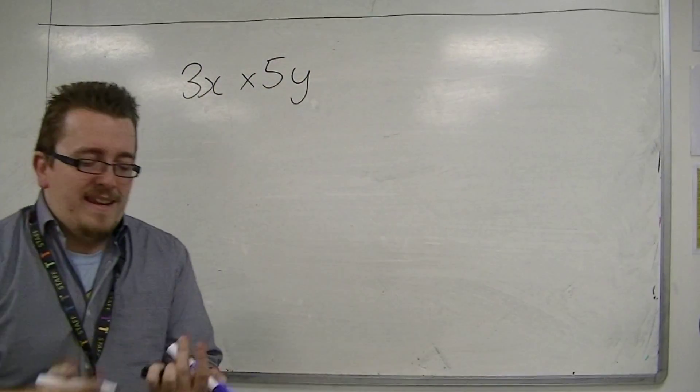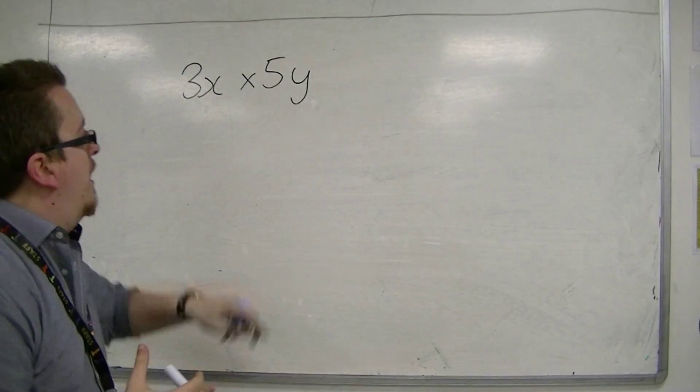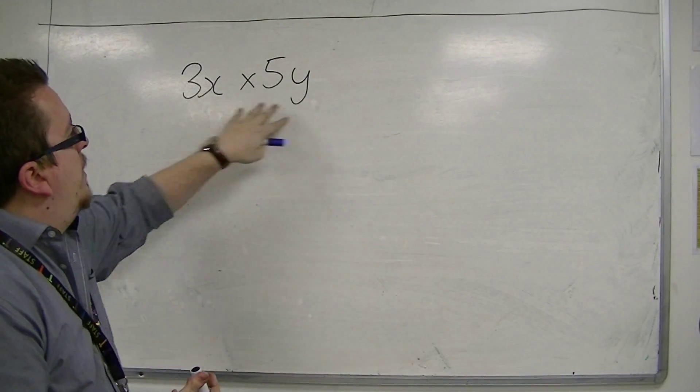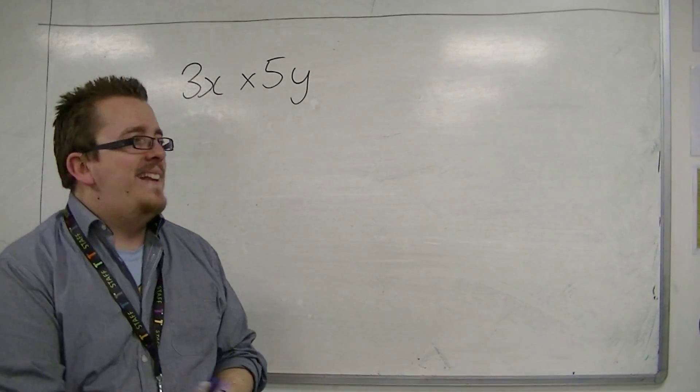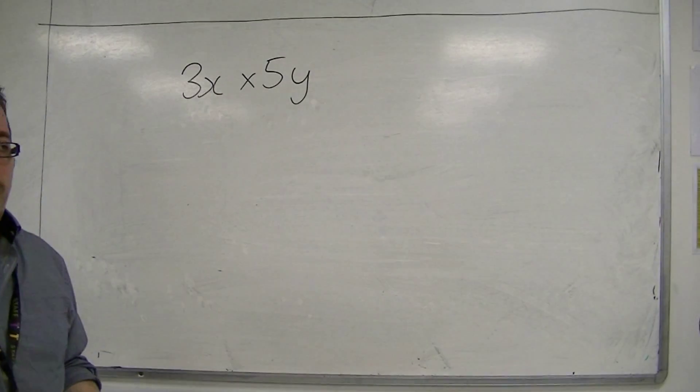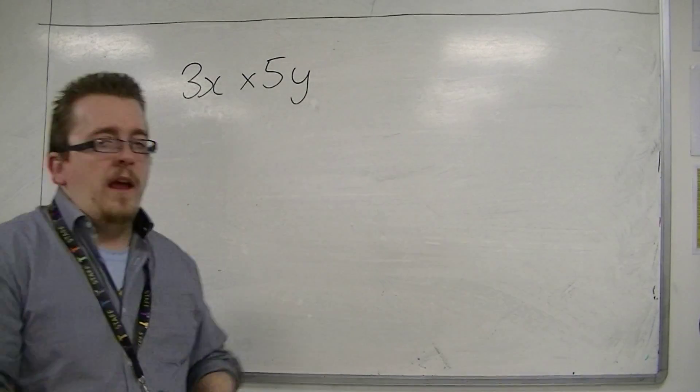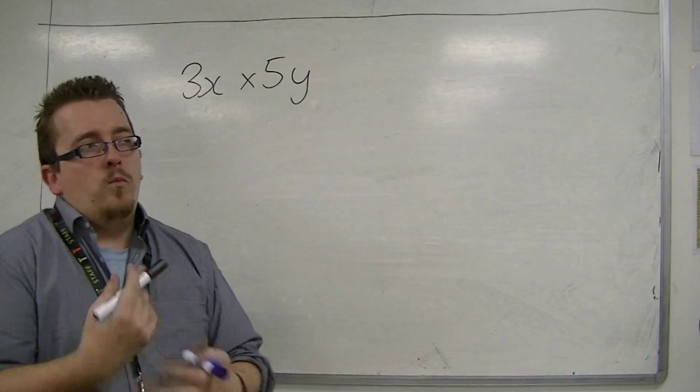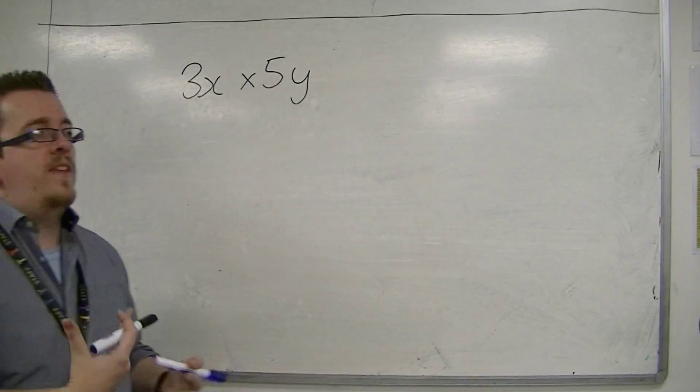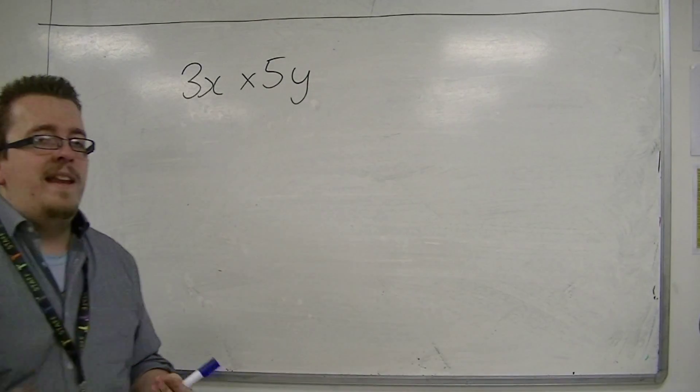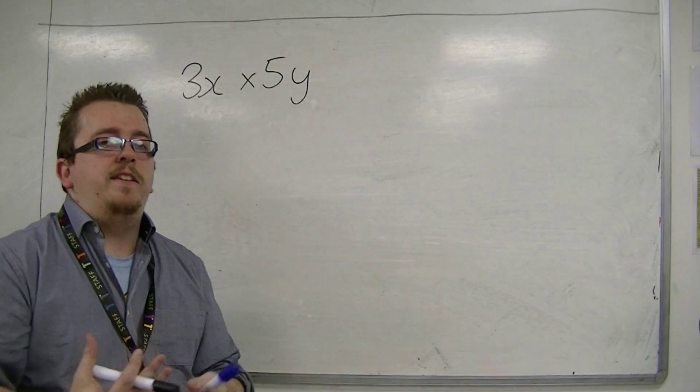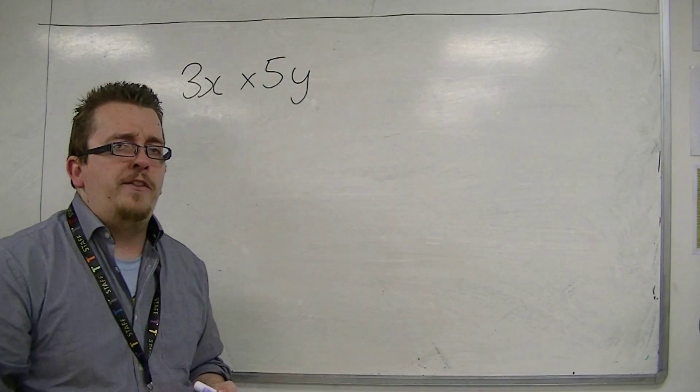And it doesn't really make any sense if we're thinking about 3 pounds times 5 euros. It doesn't make any sense to do that. So that analogy has got to go out the window. That's really only why we might be thinking about pounds and euros—to think about how collecting the like terms together to solve that type of problem.